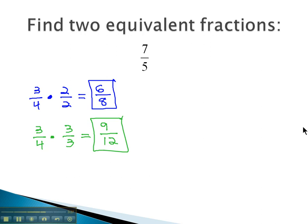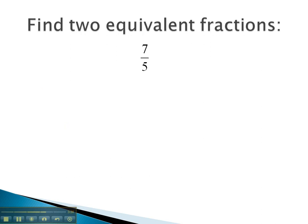How about this one, seven-fifths? We can find equivalent fractions to seven-fifths by multiplying by some one. Again, it doesn't matter which one we choose. Maybe we multiply by ten over ten. Doesn't matter, as long as the top and bottom are the same. Seven times ten is seventy, five times ten is fifty, and we have an equivalent fraction.